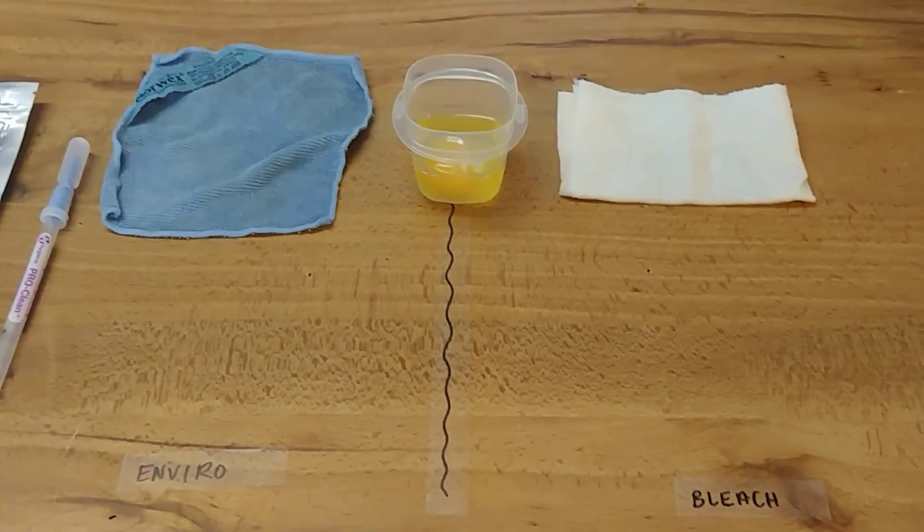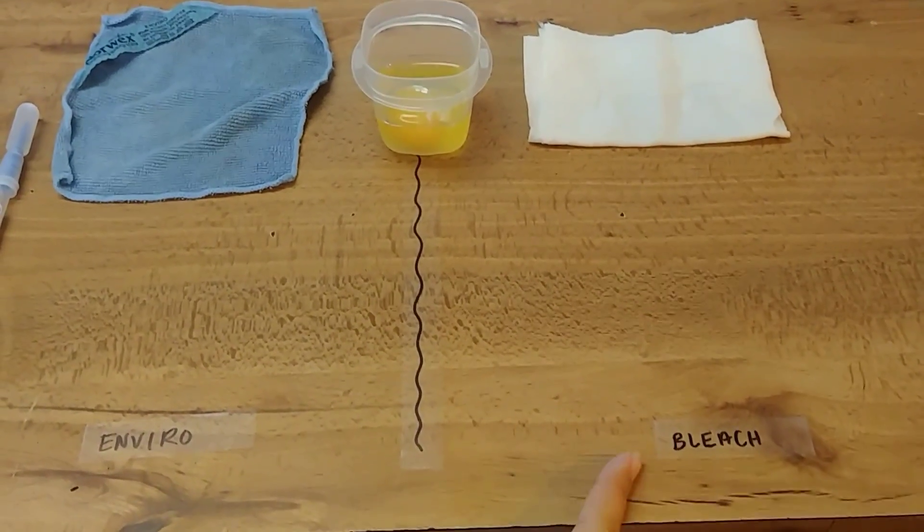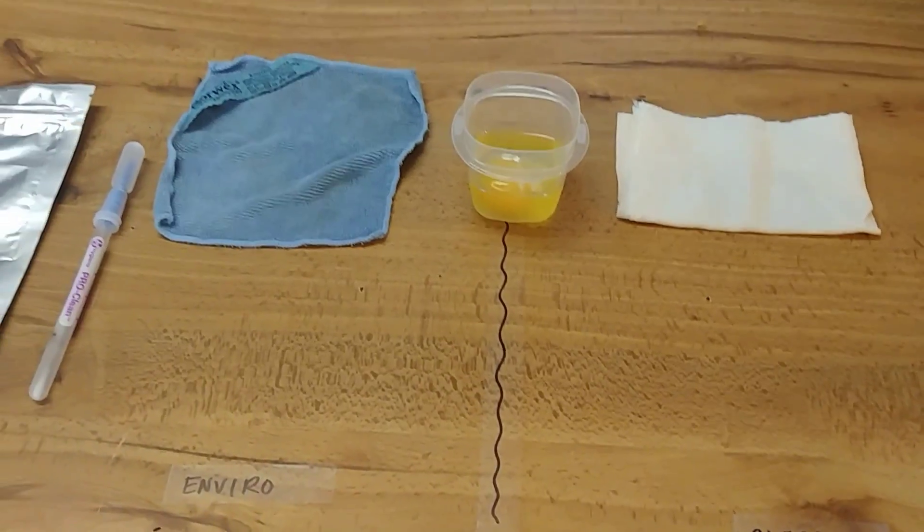So I'm going to rub a raw egg on each side. Over here we've got bleach obviously, over here we've got the Envirocloth.